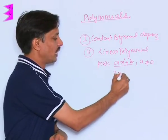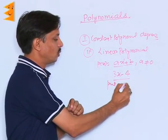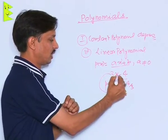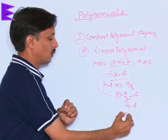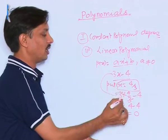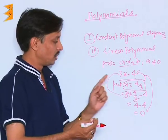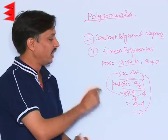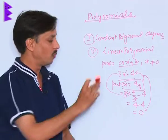For example, 3x − 4 is a linear polynomial. If we put x = 4/3, we get 3 × (4/3) − 4, the 3s cancel, leaving 4 − 4 = 0. So x = 4/3 is the zero of this polynomial. Since its degree is 1, there is no other value of x that can make it zero.